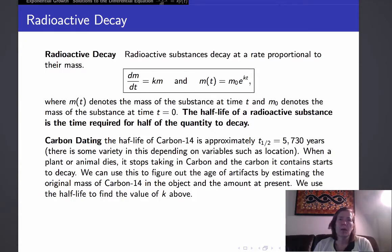Another place where this model fits very well is in the decay of radioactive substances, which decay at a rate proportional to their mass. They fit the equation that the change in the mass dm/dt equals k times m. It's proportional to the mass at time t.